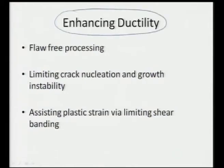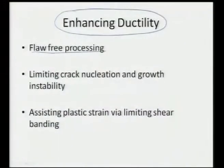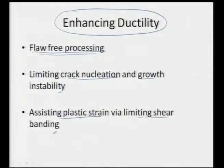The overall plasticity is attributed to grain boundary sliding and grain boundary diffusion, which leads to plastic deformation of nanocrystalline materials. How can the overall ductility be enhanced? Strength can be controlled by grain size and yield stress, but ductility can be achieved by flaw-free processing — the processing itself should not induce any cracking, flaw, inclusion, or impurity into the system. We need to have flaw-free processing, which will avoid generating crack nucleation points and will also avoid growth instability.